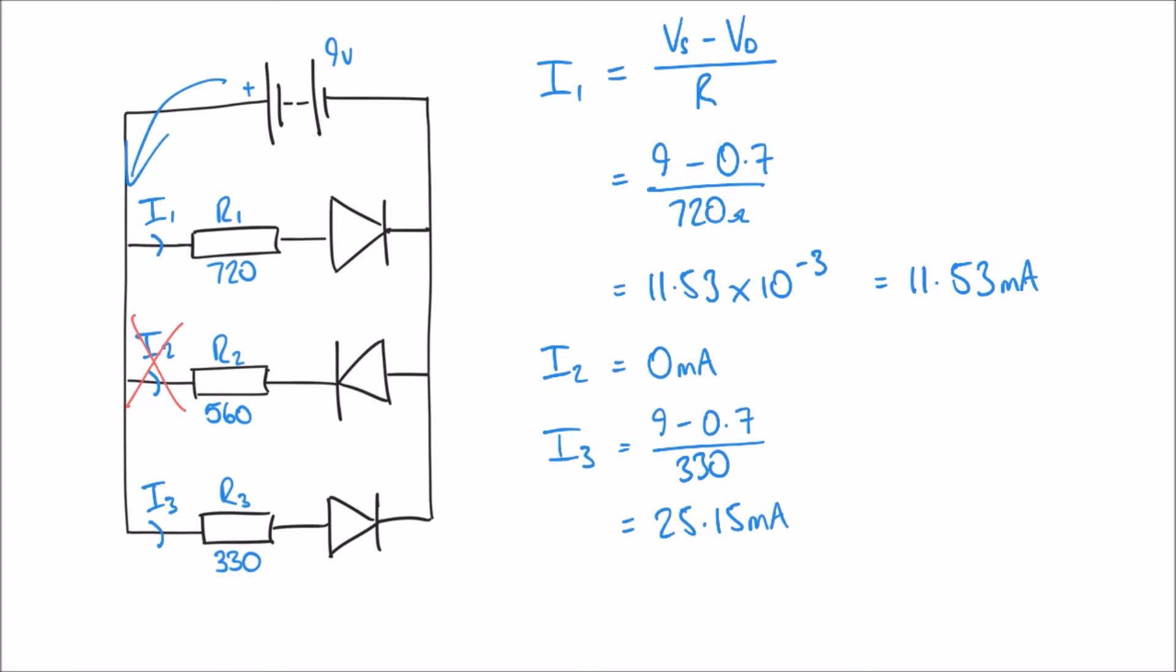We've worked out these three separate currents: I1, I2, and I3. But we can also work out the current coming from the supply. Thinking about Kirchhoff's current law, the supply current Is is going to be the sum of the three currents. Kirchhoff's current law says that the current going into a junction is equal to the sum of the currents leaving that junction. So Is is simply 11.53 plus zero plus 25.15, which gives me a total supply current of 36.68 milliamps.